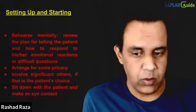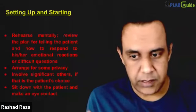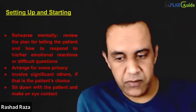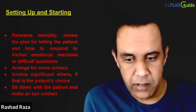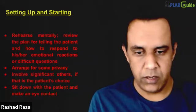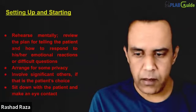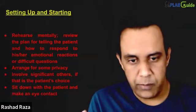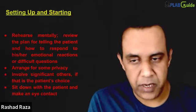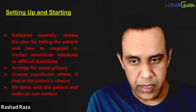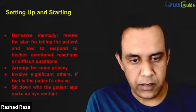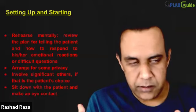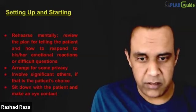Make sure no one who is not required is present in the room. Remove any distractors — for example, take the phone receiver off. Sit down with the patient or relatives, make good eye contact, introduce yourself, and check their identity and their relation to the patient. This is all about setting up and starting the conversation — the first component of SPIKES.